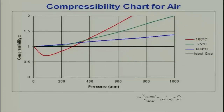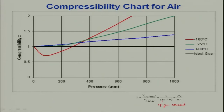For that we need to look at the compressibility factor Z. Z is basically V_actual divided by V_ideal, and V_ideal can be written as RT/P. Keep in mind that R here is the specific gas constant. If Z equals 1, then it is an ideal gas; if Z is different from 1, it is a real gas.